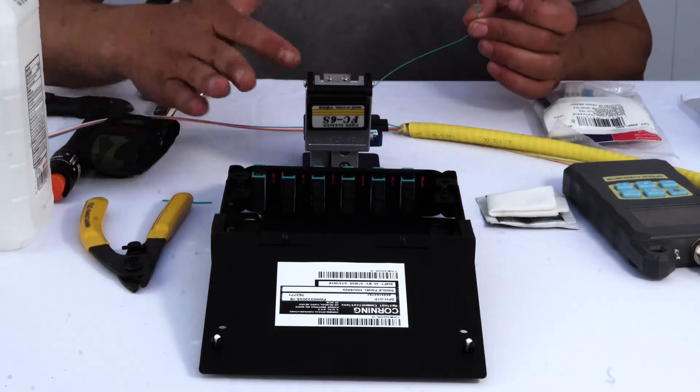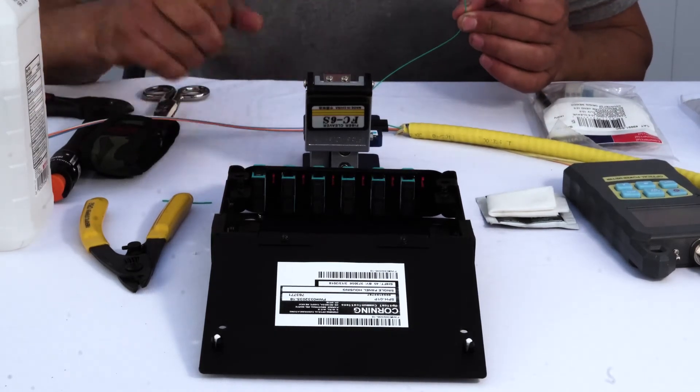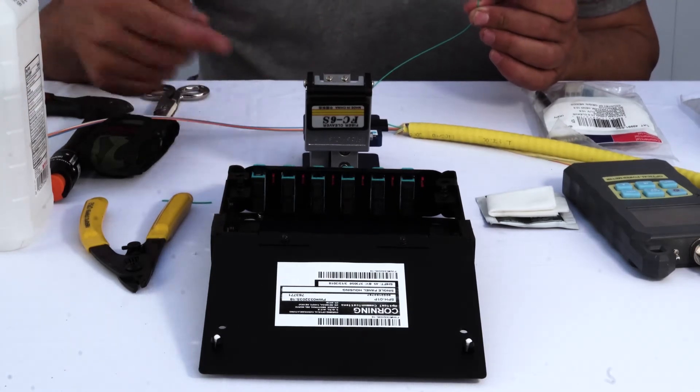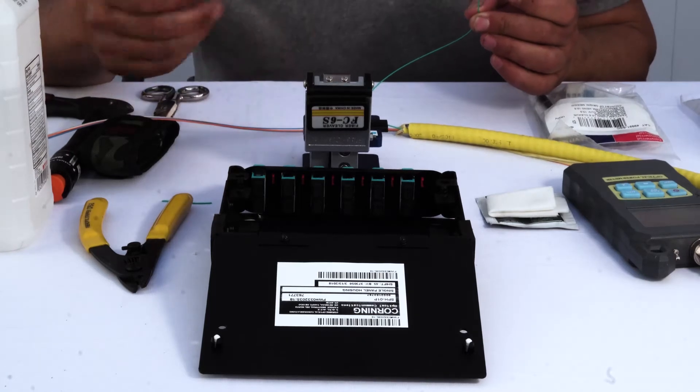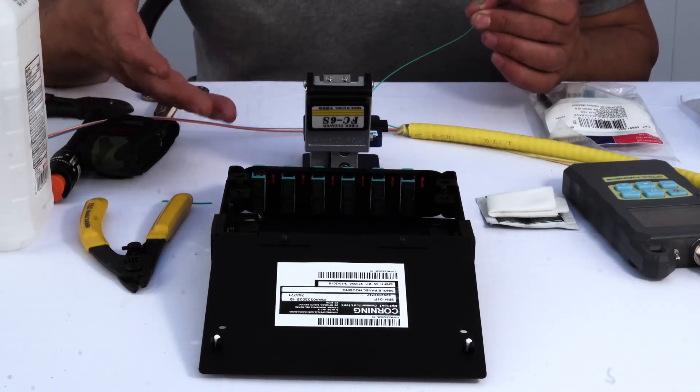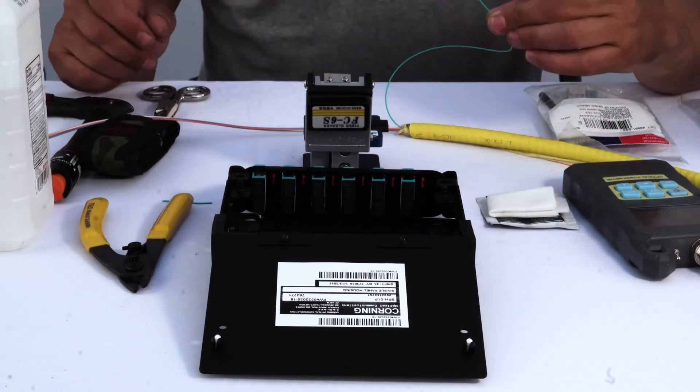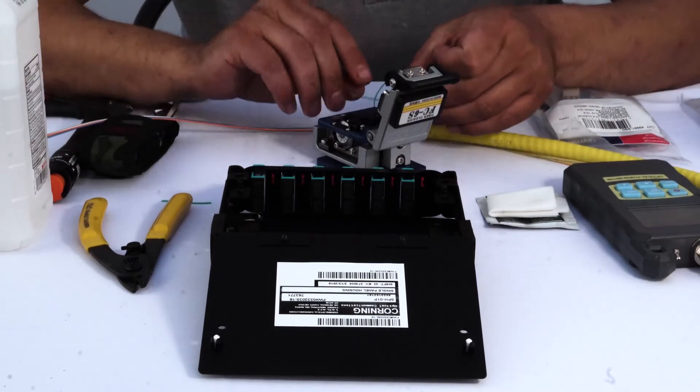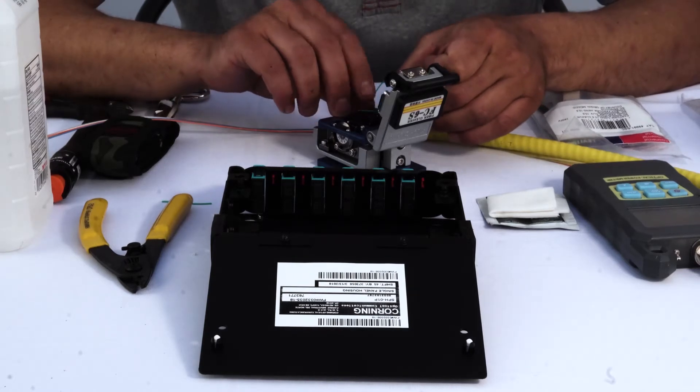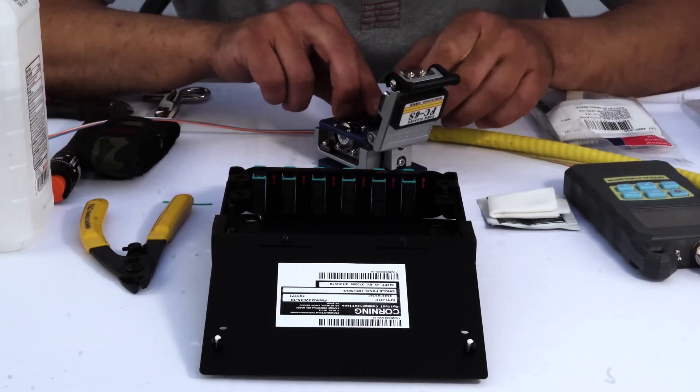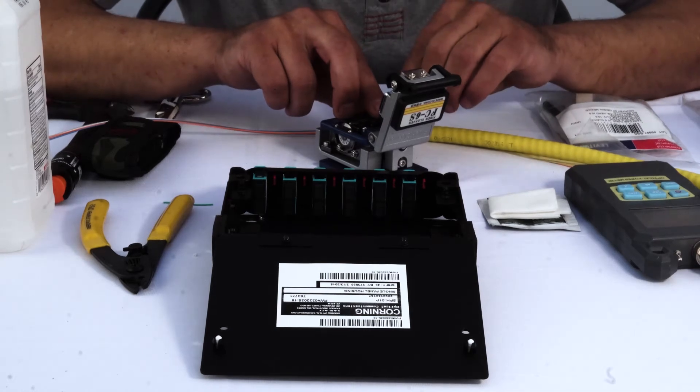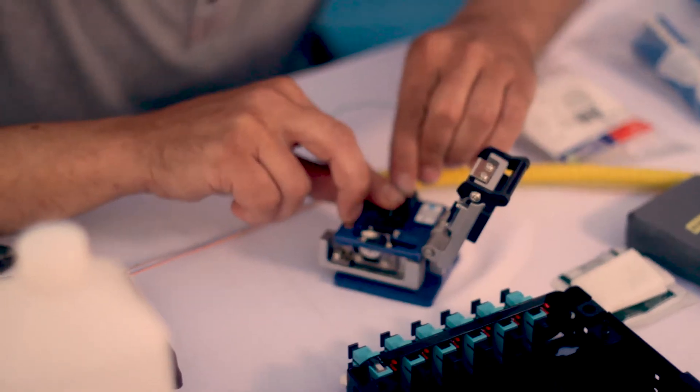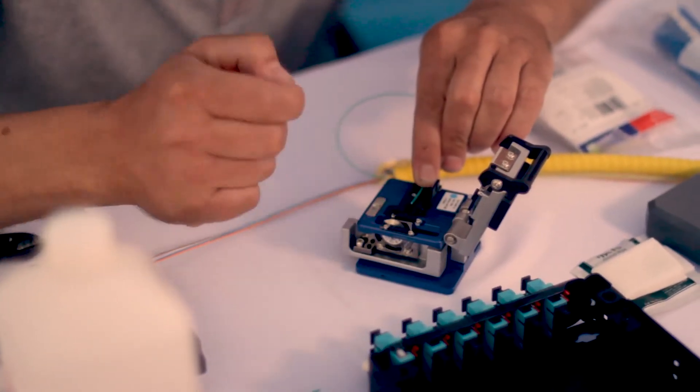All right, so onto the cleave. Opening up our cleaver, and this has a very sharp wheel inside. Through the lifetime of this tool we're able to rotate this wheel three more times and get more life out of that cutting blade, which is nice. We'll simply open our trap door here. I'm going to go ahead and set my fiber into the middle slot, and I'll actually pull it back until the outside sheathing is there at 10.5.